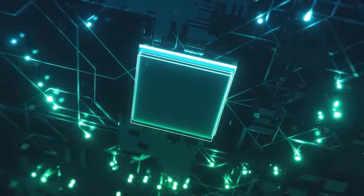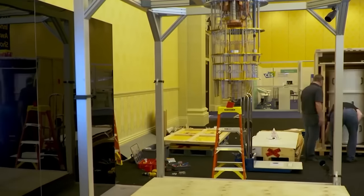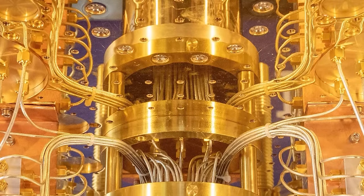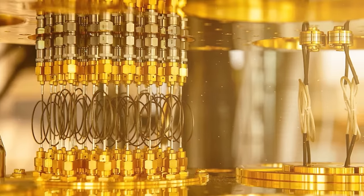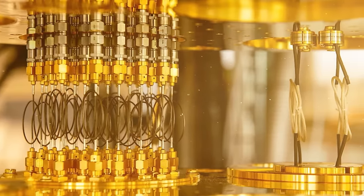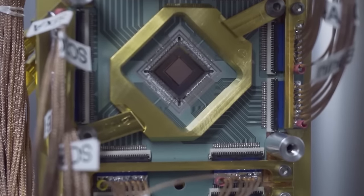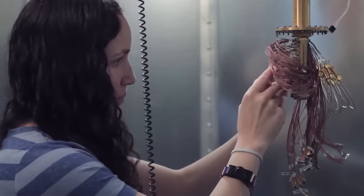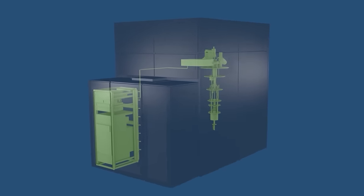But what's truly remarkable is the environment within these dilution refrigerators. The quantum processor, along with its qubits, is suspended in a carefully engineered environment that shields it from external magnetic fields, cosmic rays and even stray photons. This isolation is crucial. It's what allows the quantum processor to preserve the delicate quantum states of the qubits during computation, akin to performing a high wire act without a safety net, where even the slightest interference could have significant consequences.